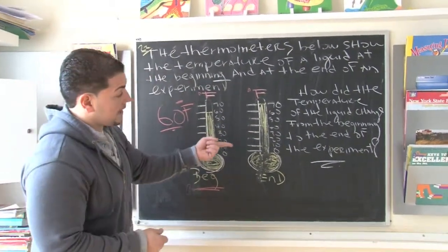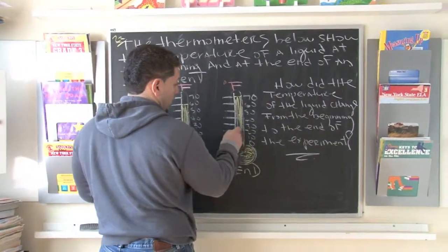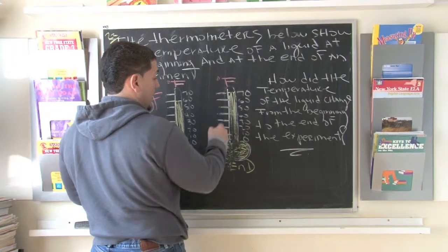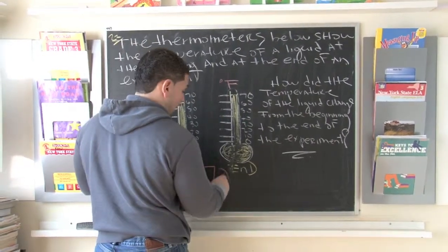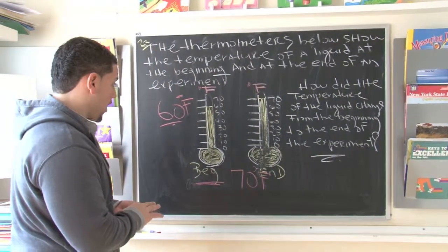Now if we take a look at the next thermometer, this is after the experiment. If we read it: 0, 20, 40, 60, 70, the thermometer shows the temperature of 70 degrees Fahrenheit. So this is what we know about it so far.